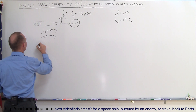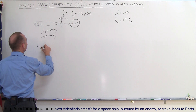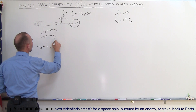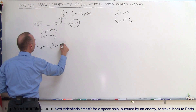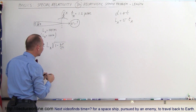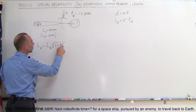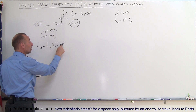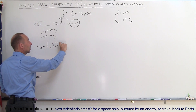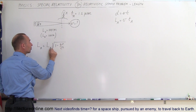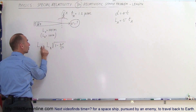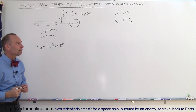We can say that the length as measured by A equals the length as measured by B times the square root of 1 minus V squared over C squared. When V equals zero, the length is the same. But when V is large, 1 minus a large fraction becomes a small fraction, which means the length as seen by A will be small compared to the length as seen by B.